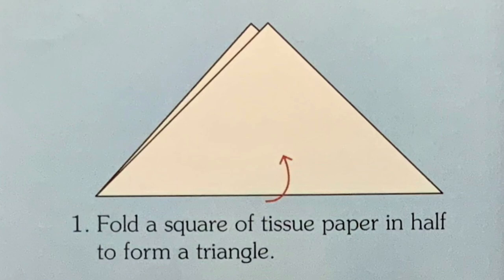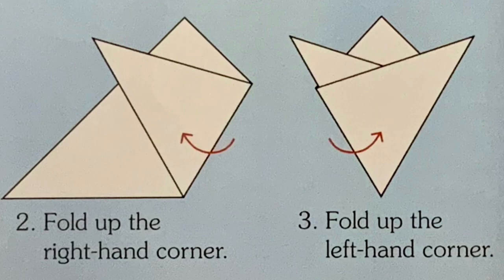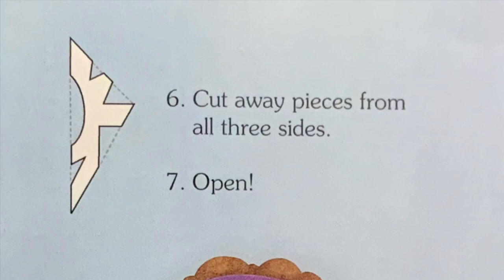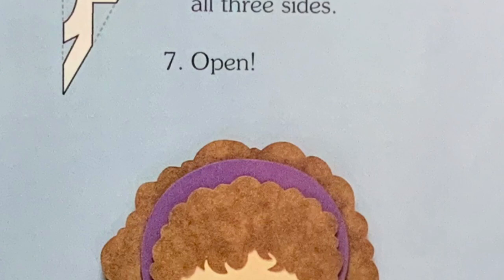Fold a square of tissue paper in half to form a triangle. Fold up the right hand corner. Fold up the left hand corner. Fold up the left hand corner again. Fold this in half. Cut off the top. Save the bottom. Cut away pieces from all three sides. Open.